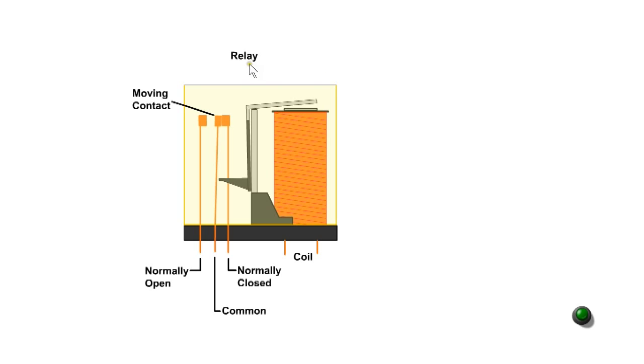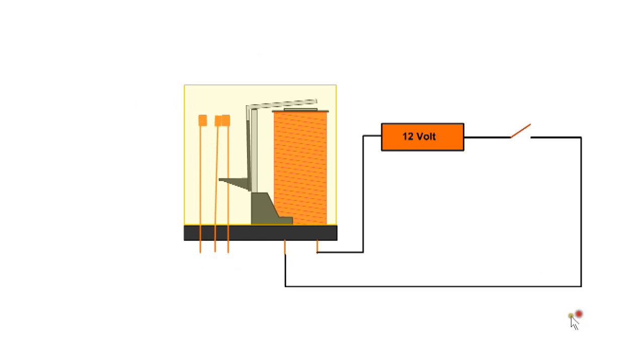A relay also depends on magnetism to operate. It has 3 contacts. The center is common, the one on the right normally closed and the one on the left is normally open. When a voltage is applied to the coil, it attracts the armature and the center contact changes over. A relay allows a low power circuit to operate a high power circuit, for example, the rear window defogger in a car.